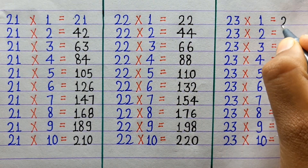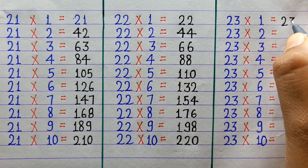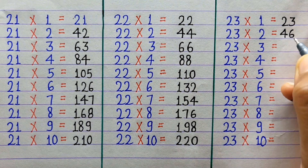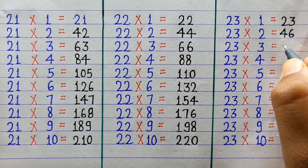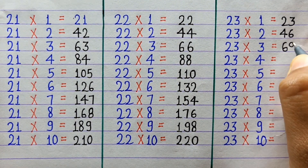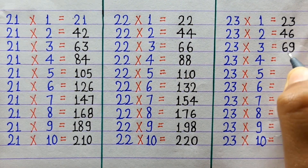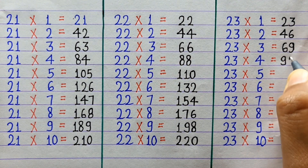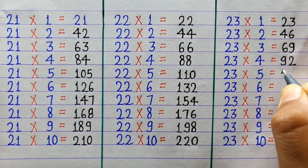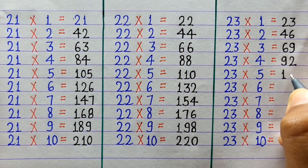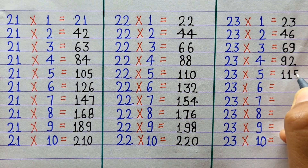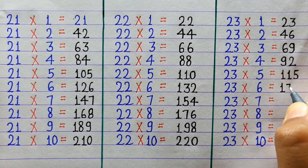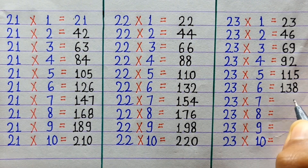23×1=23, 23×2=46, 23×3=69, 23×4=92, 23×5=115, 23×6=138.